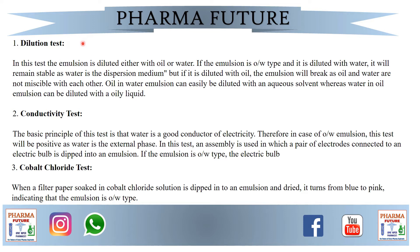We will now see the identification tests for the type of emulsion. First is the dilution test: the emulsion is diluted with either water or oil. If the emulsion is O/W type, it is diluted with water and remains stable. If diluted with oil, the emulsion breaks, since oil and water are not miscible. O/W emulsions can be easily diluted with aqueous solvents, while W/O emulsions can be diluted with oily liquids.